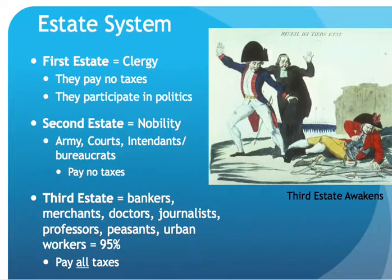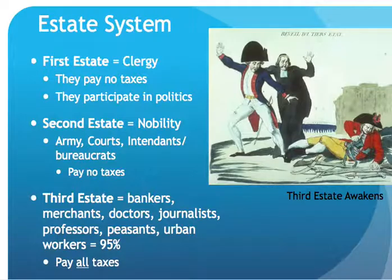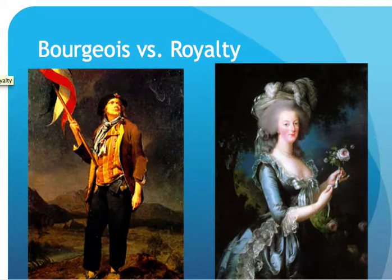Here's a quick summary of the estate system. In this cartoon, you see the third estate awakening — the nobility and clergy are scared as it removes its chains and picks up weapons to overthrow them. That's largely a result of the discrepancies in ownership, taxation, and population percentage. A lot of historians have framed the French Revolution as class warfare between the bourgeoisie and the nobility, royalty, and clergy, which is somewhat true with shades of gray.